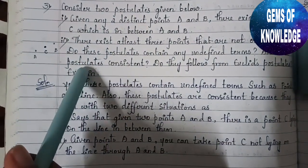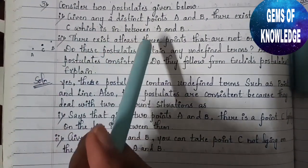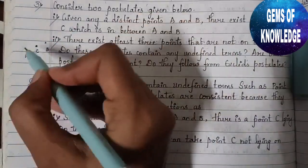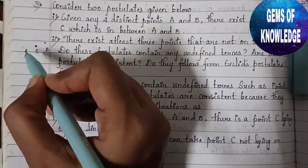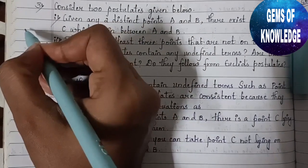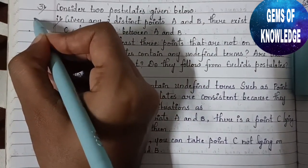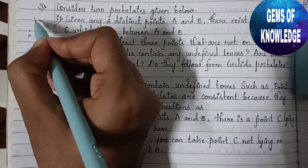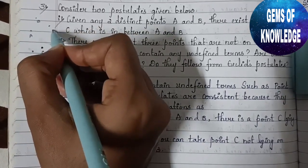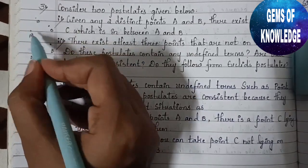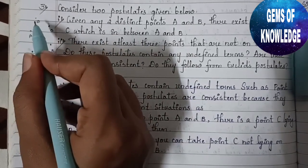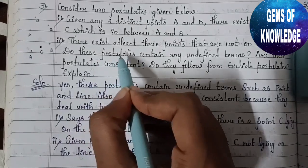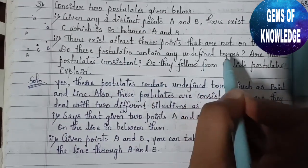The second postulate states that there exist at least three points that are not on the same line. So if we draw it, if this is A, this is B, and this is C, these are three points which are not on the same line — they are in different positions.